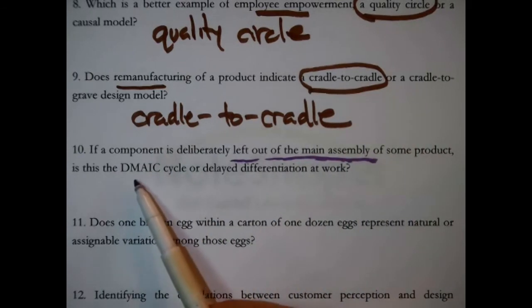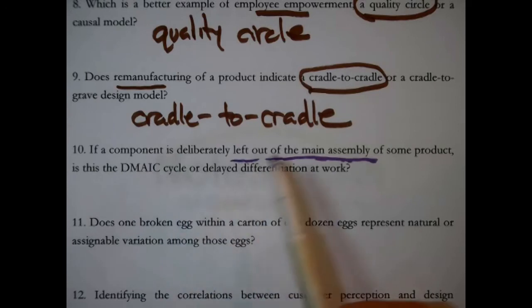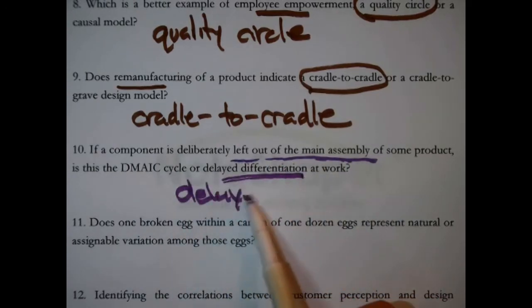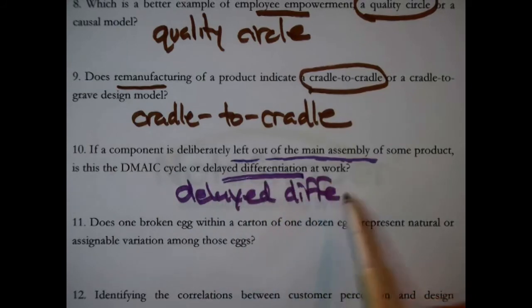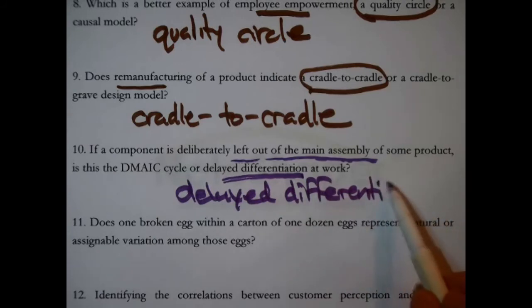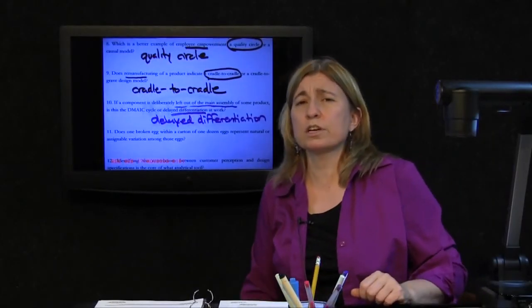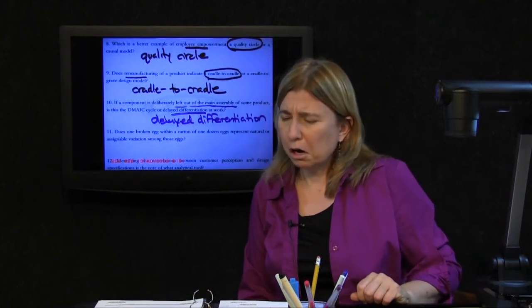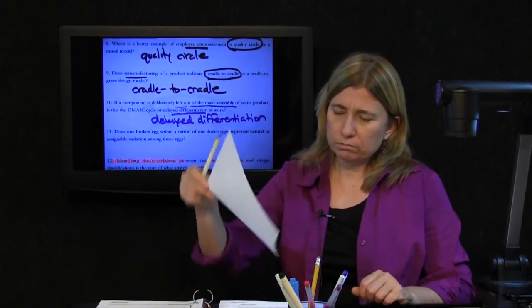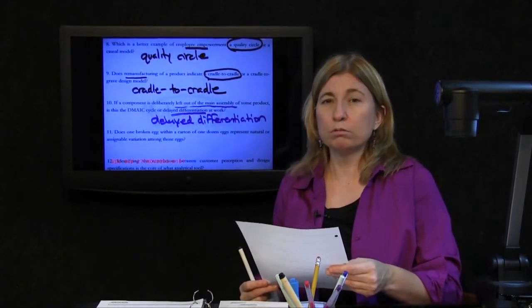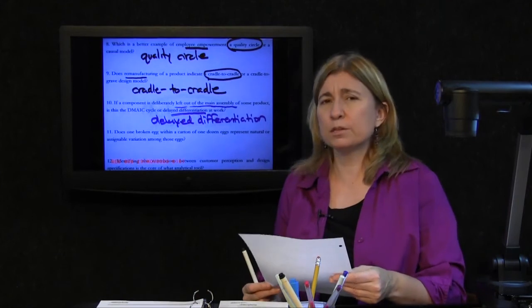If a component is deliberately left out of the main assembly of some product, is this the DMAIC cycle or delayed differentiation at work? The answer is delayed differentiation, because that is the explanation for why you might leave a part out. The DMAIC cycle refers to Six Sigma methodology: design, measure, analyze, improve, and control, straight from my notes. It's a methodology.